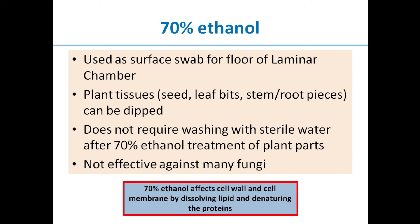70% ethanol affects the cell wall and cell membrane by dissolving lipid and denaturing proteins, thereby killing the microbes. One may ask why it is 70% ethanol and not absolute or 100% ethanol. Because 70% ethanol contains water, it takes time to evaporate and remains for longer with the treated tissues, thereby showing its inhibitory or killing effect on the microbes.